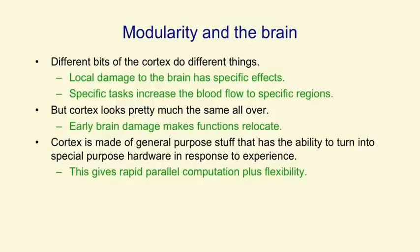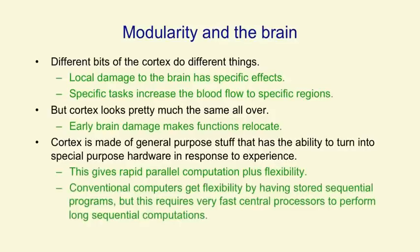This suggests the cortex is made of general purpose stuff that has the ability to turn into special purpose hardware for particular tasks in response to experience. That gives you a nice combination of rapid parallel computation once you've learned, plus flexibility to learn new functions. It's quite like an FPGA, where you build some standard parallel hardware and then put in information that tells it what particular parallel computation to do. Conventional computers get their flexibility by having a stored sequential program, but this requires very fast central processors to access the lines in the sequential program and perform long sequential computations.